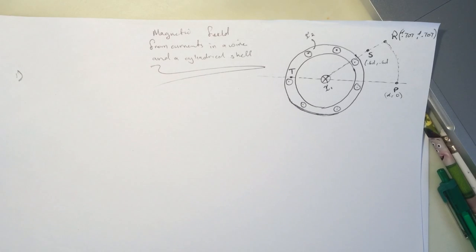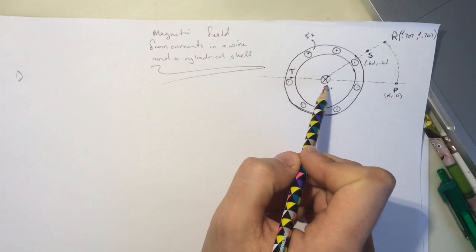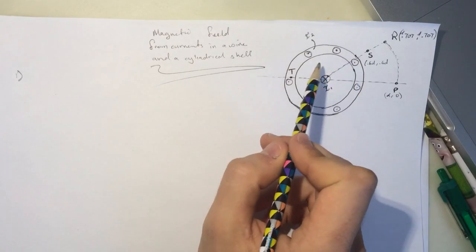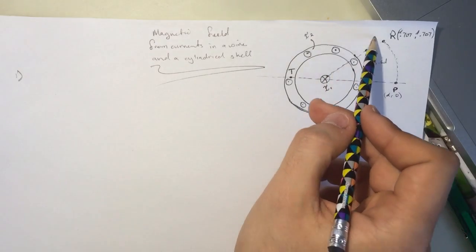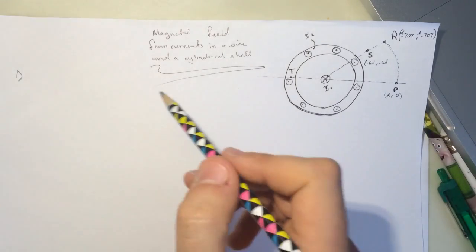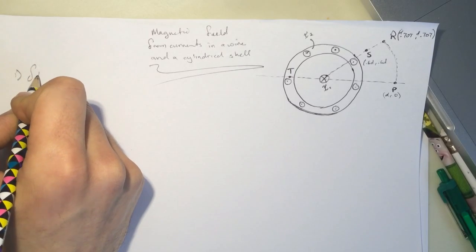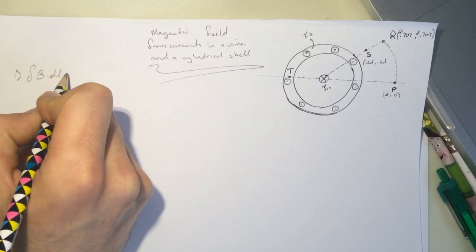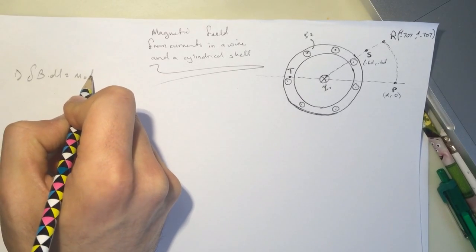The first question is asking, what is the By at the point P? So this current I1 is pointing into the screen and the I2 is pointing out of the screen. And if we want to draw Ampere's law, the I enclosed, integral of B dot DL equals mu naught I enclosed.